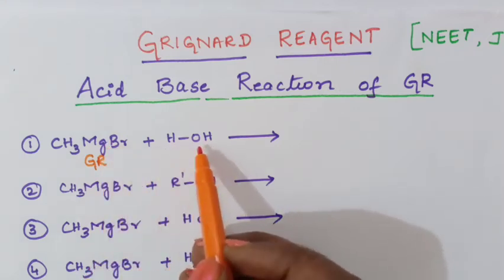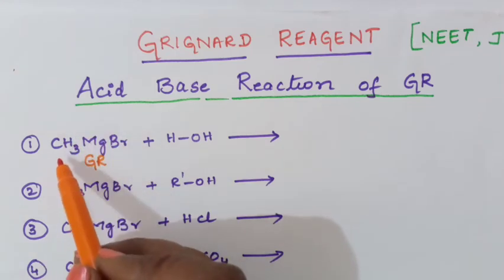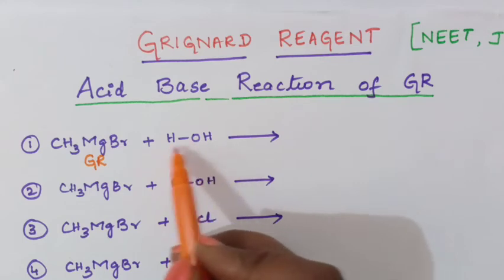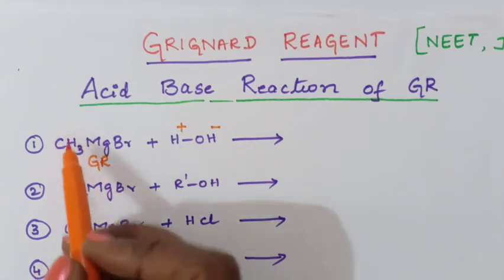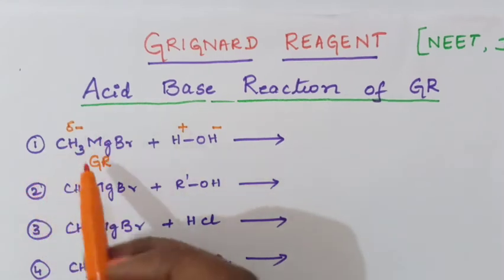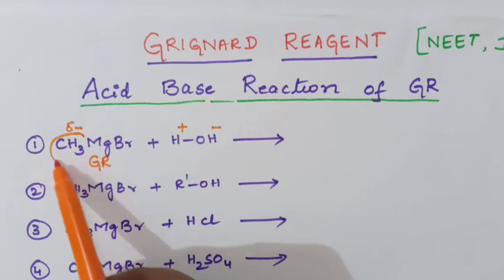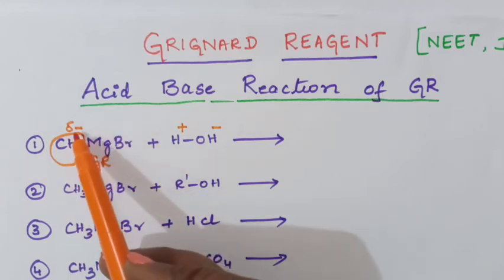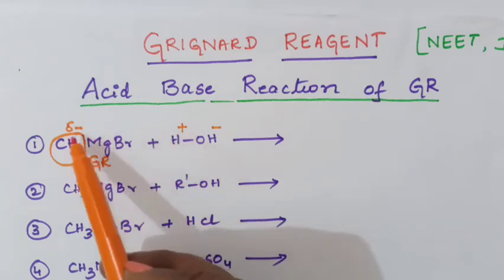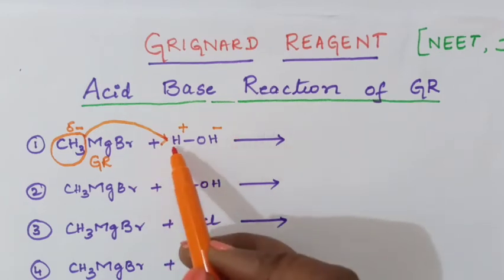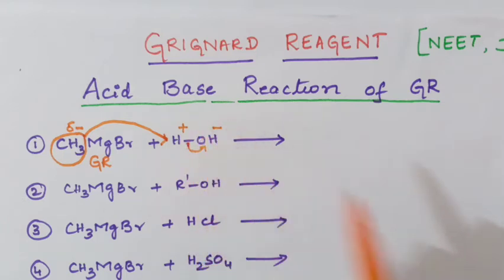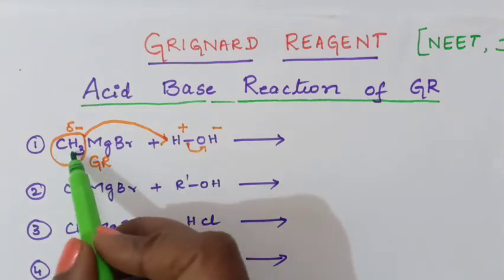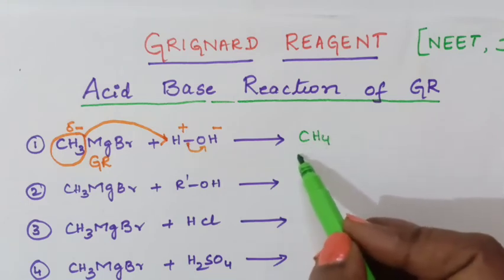Methyl magnesium bromide is reacting with water. Here, Grignard reagent will be acting as a base, so water provides the acidic hydrogen — H will be acidic hydrogen here with a positive sign, and OH minus will have a negative sign. The alkyl group has a partial negative sign. So the methyl group, having a negative sign, will attack the positive species — that is, methyl group will attack the H plus ion. The electrons shift to OH, so it becomes OH minus. The product you get is CH3 plus hydrogen, which becomes CH4 — that is methane.